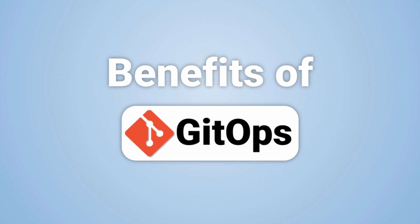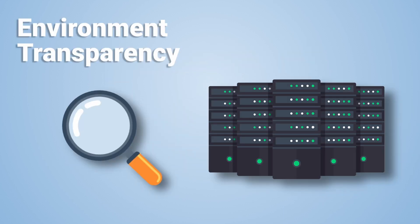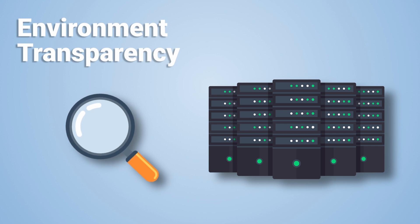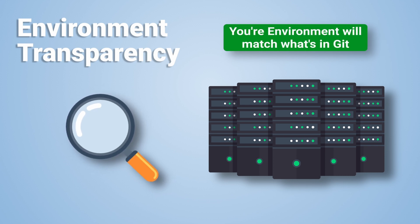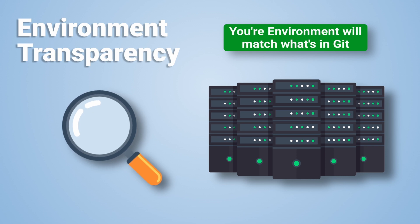Now that you have an understanding of what GitOps is, let's go over the four major benefits that GitOps provides you. The first one is Environment Transparency. Since GitOps operators are constantly looking at your repository and automatically applying the changes as they come in, Git becomes your source of truth. It's no longer guesswork on what configuration the production servers are actually running.